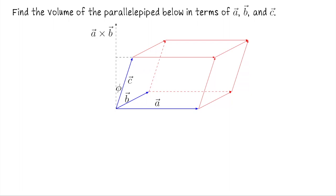Let's finish by using the cross product to compute the volume of a parallelepiped — an object whose six sides are all parallelograms. We have three vectors A, B, and C. A and B form the parallelogram base and top; C and B form the left and right sides; and A and C form the front and back faces.